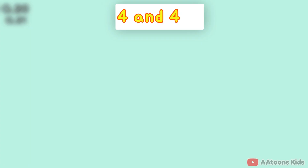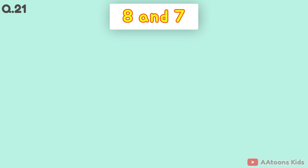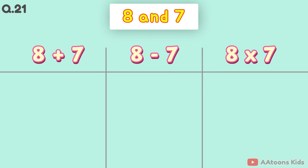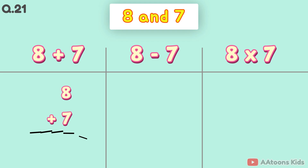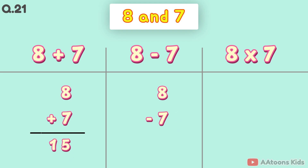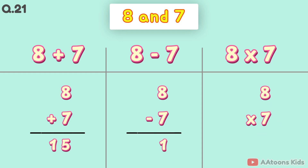The two numbers are 8 and 7. 8 plus 7 is 15. 8 minus 7 is 1. 8 times 7 is 56.